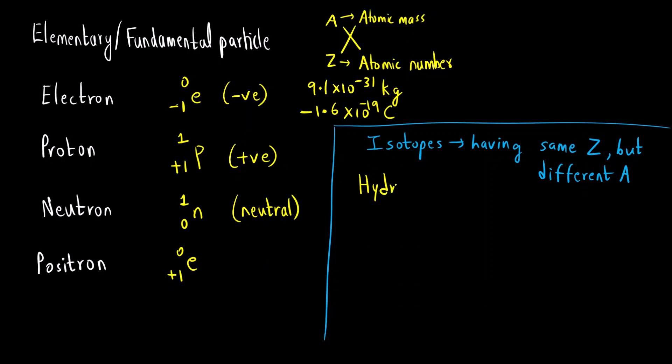Hydrogen has three isotopes. One is protium, another is deuterium, and the third one is tritium. What are the symbols? This is capital P, capital D and capital T. And what are the atomic symbols?